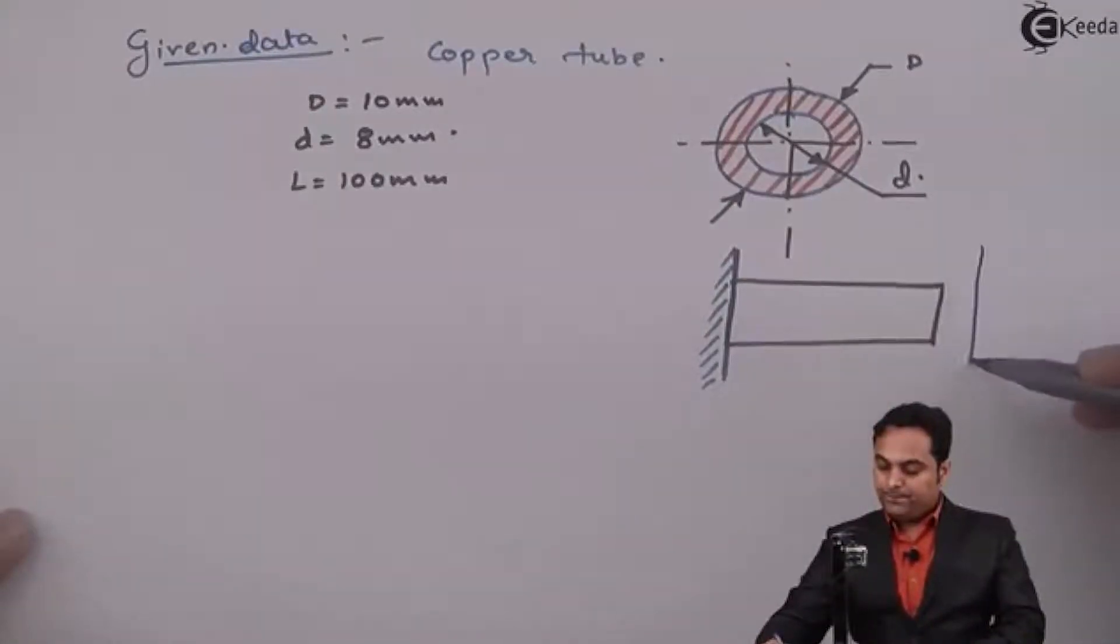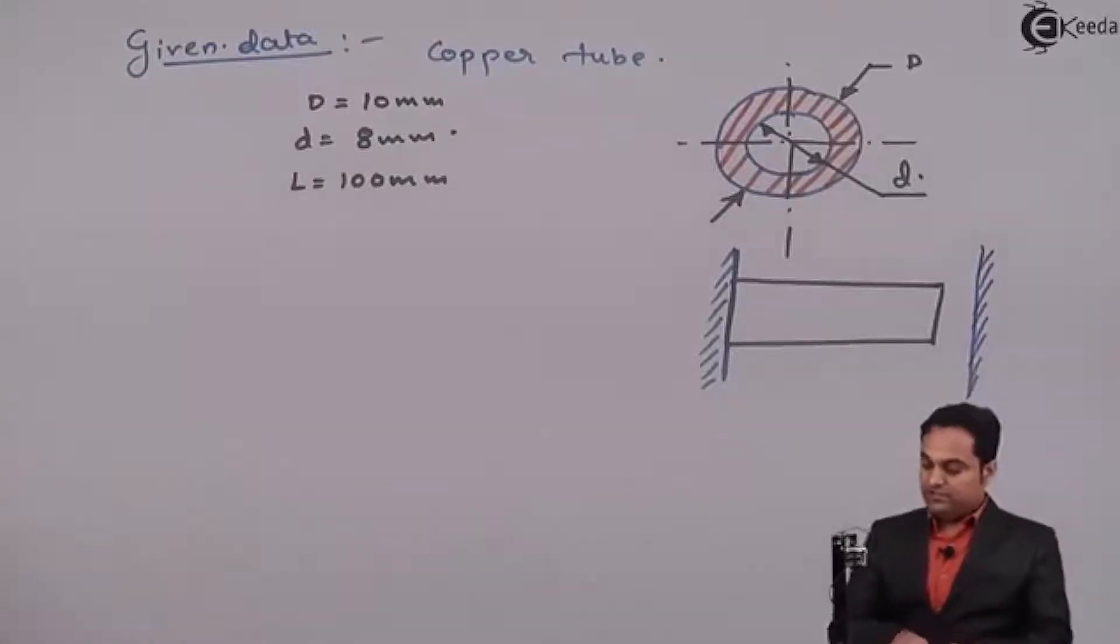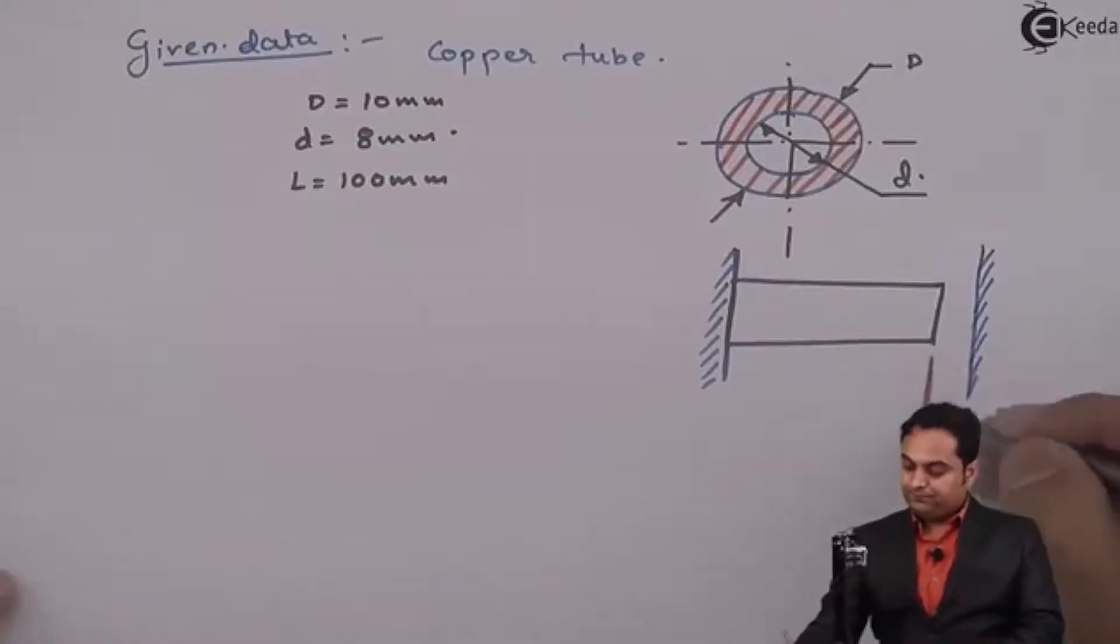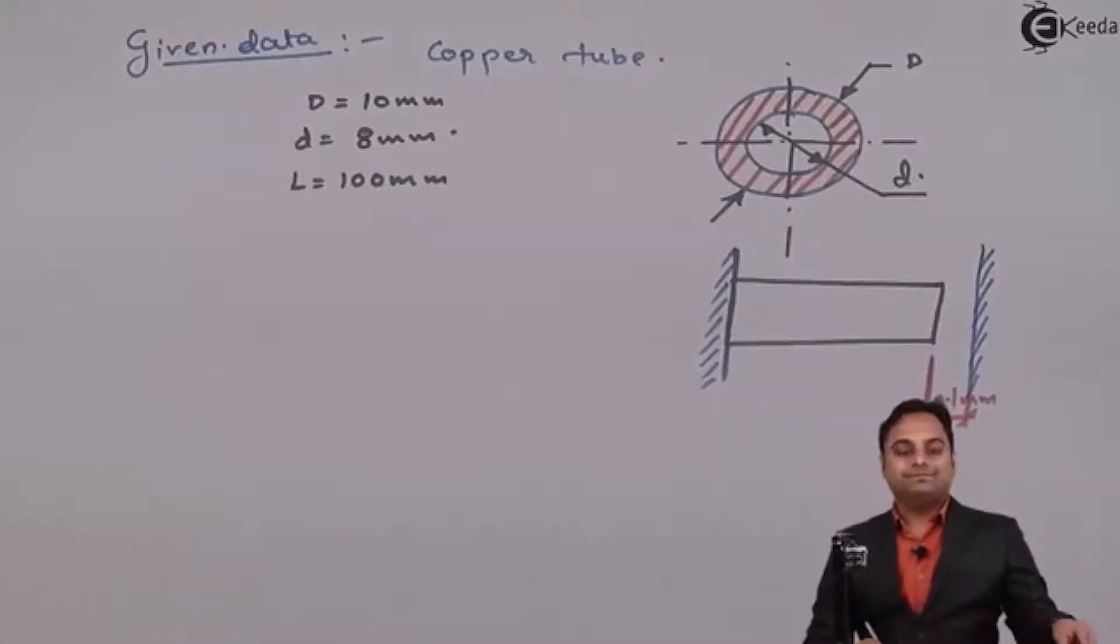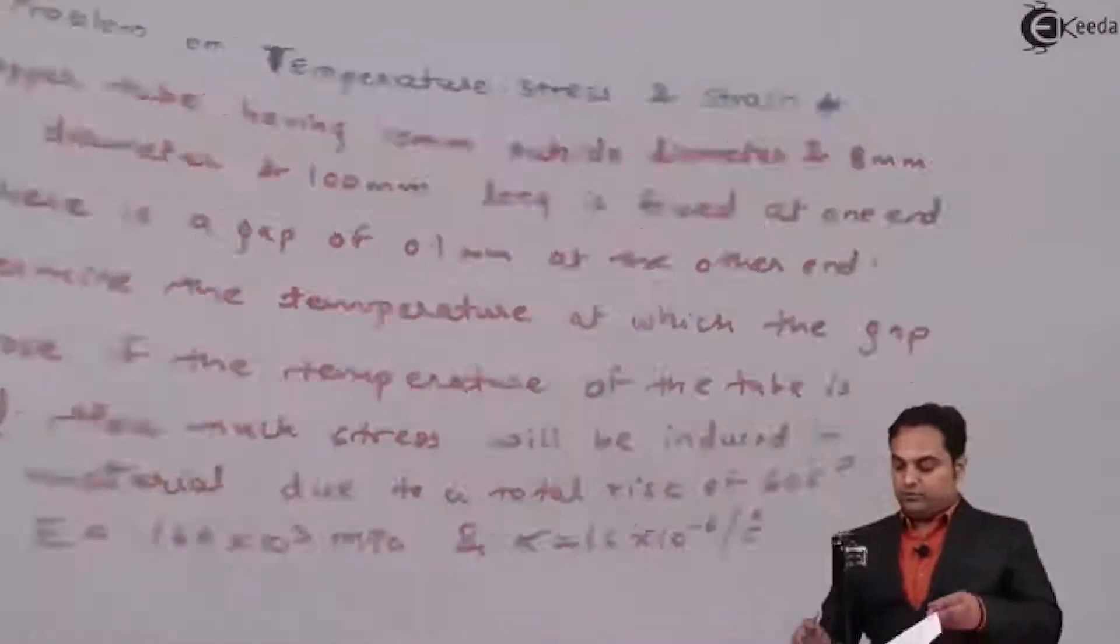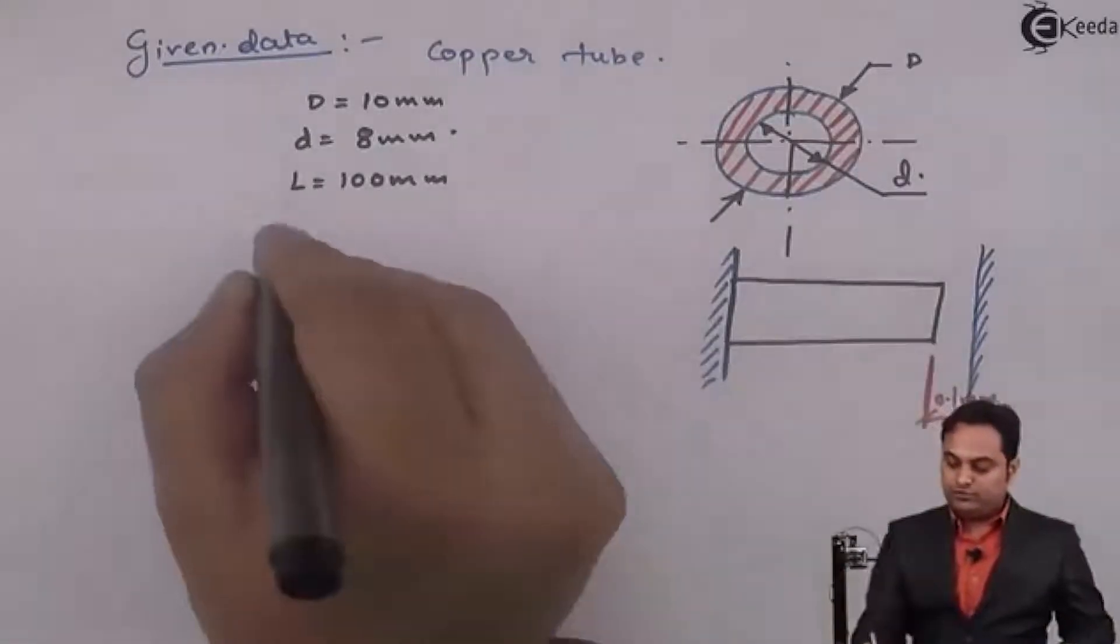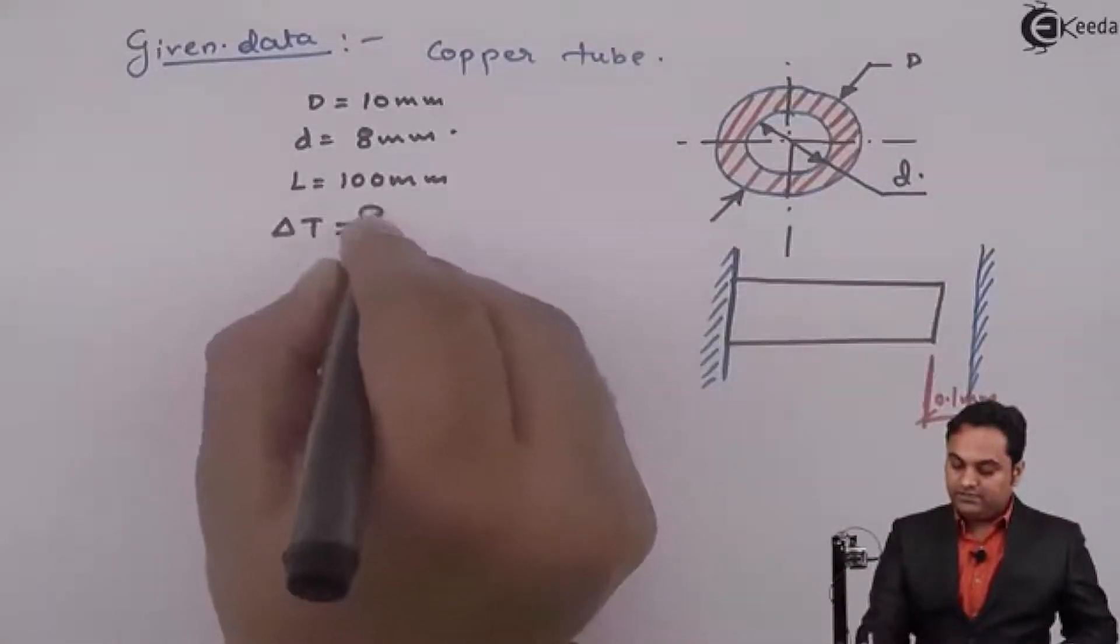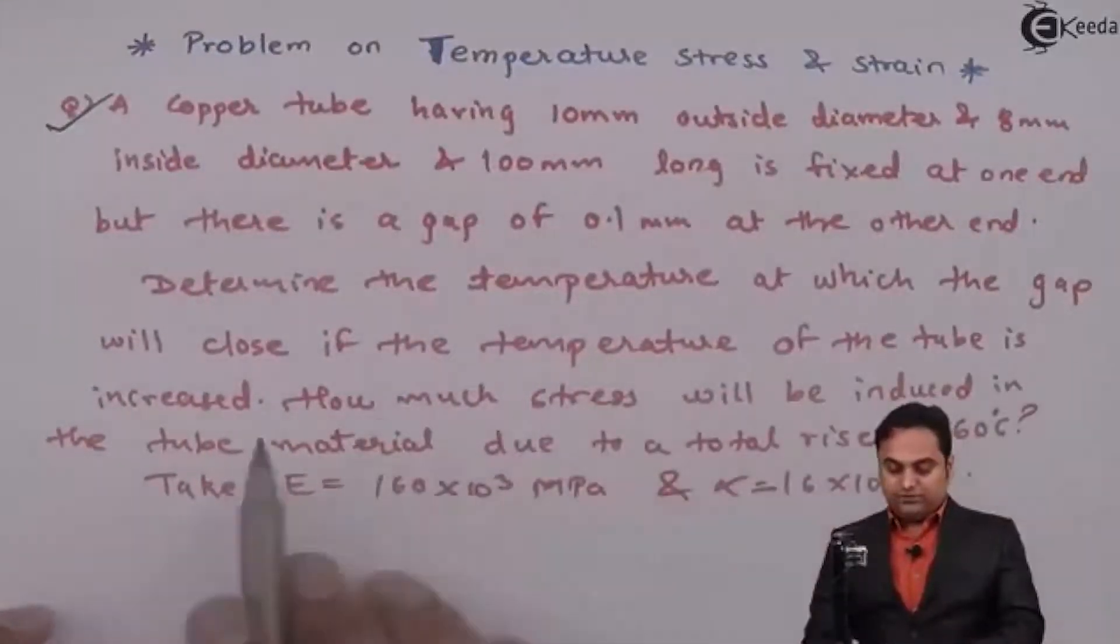At the other end there is a gap of 0.1 mm. Now determine the temperature at which the gap will close, so the temperature at which this gap is going to close, that I'll denote it as delta T.